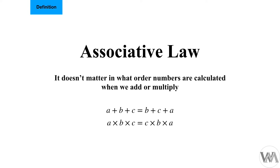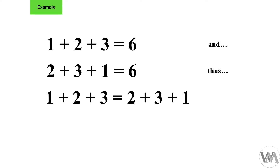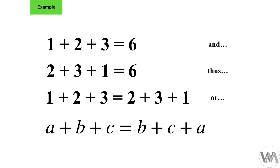Let's look at an example. If we add one, two, and three together we get six. But we will also get six if we add two, then three, then one together. Thus one plus two plus three is the same as two plus three plus one — both equal six. So a plus b plus c equals b plus c plus a.